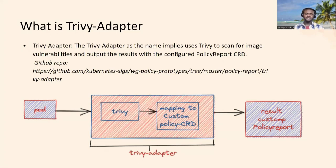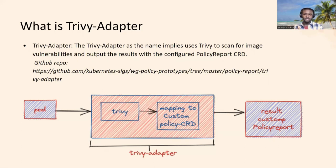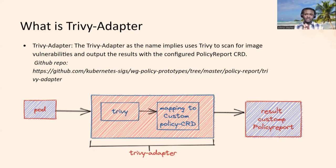What is Trivy adapter? As the name implies, Trivy adapter is a combination of both Trivy the scanner and the adapter, which is the policy report CRD. What it does is take our container images, scan them with Trivy, then map the results with the policy report, then report the results as a policy report. Once Trivy adapter detects our pod, Trivy takes charge, scans our container image, maps the results from Trivy to the policy CRD, then reports the results with the policy report.